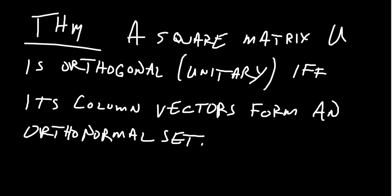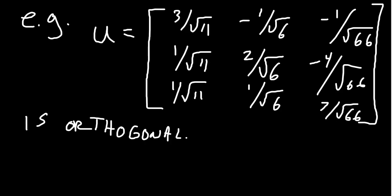People sometimes ask: why call it orthogonal if the columns need to be orthonormal? Some authors actually insist on calling these orthonormal matrices, and that makes sense — but the orthogonal label is used more commonly, so I'll stick with that. Now, because the transpose of an orthogonal matrix is itself orthogonal, it's also true that a matrix is orthogonal if and only if its row vectors likewise form an orthonormal set. You can look at columns or rows, and both will be orthonormal sets.